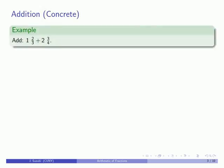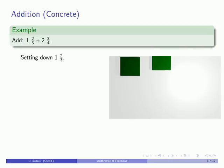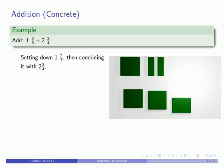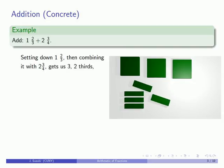For example, suppose we want to add 1 and 2 thirds and 2 and 3 fourths. We'll set down 1 and then take 2 thirds of another unit. Next, we'll set down 2 and take 3 quarters of another unit. We'll combine them to get 3 and some additional pieces, which are 2 thirds and 3 fourths.